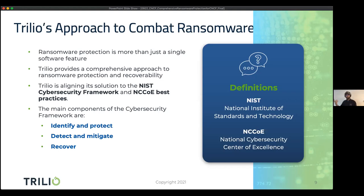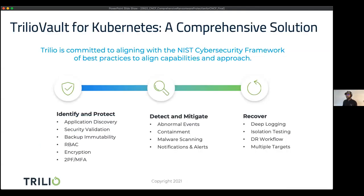You want to catch in real time if someone is trying to delete or double-encrypt your data, versus waiting for it to happen. The third pillar is Recoverability — you have immutable backups and are able to use those to recover. It's not just taking an immutable backup; you want to make sure you have isolation testing, validate that it's clean, and then bring it in. Overall, we're extending what we can do to identify, detect, and recover from a ransomware attack.